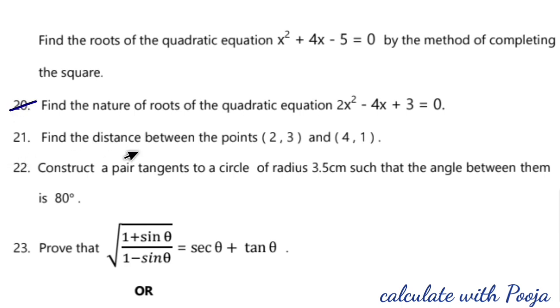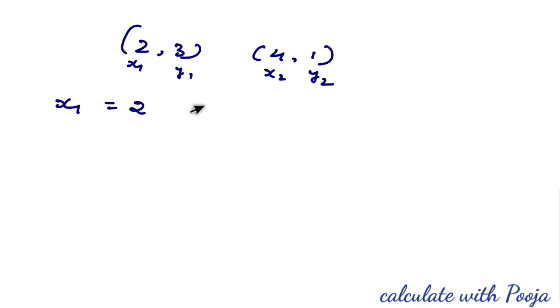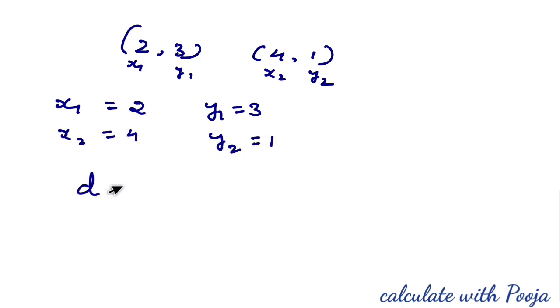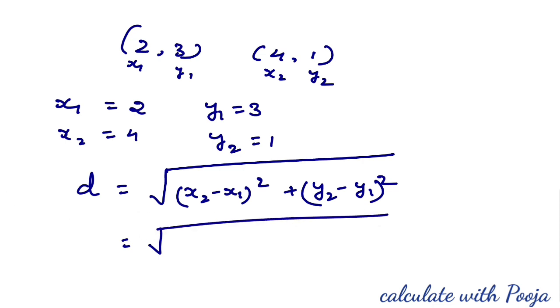Next, question 21: find the distance between the points (2, 3) and (4, 1). Let (x₁, y₁) = (2, 3) and (x₂, y₂) = (4, 1). We know the distance formula: D = √((x₂−x₁)² + (y₂−y₁)²).